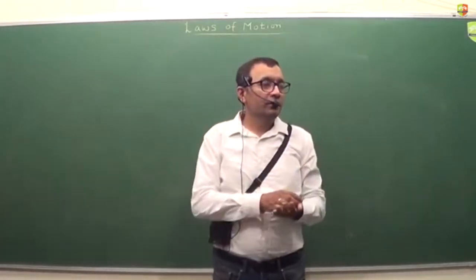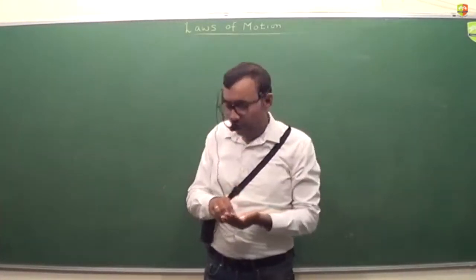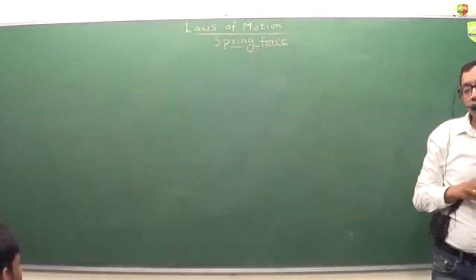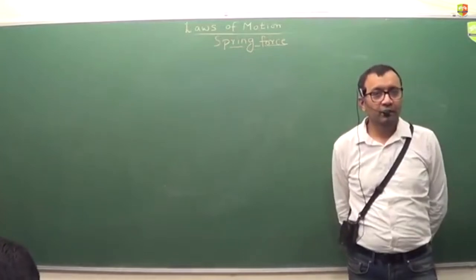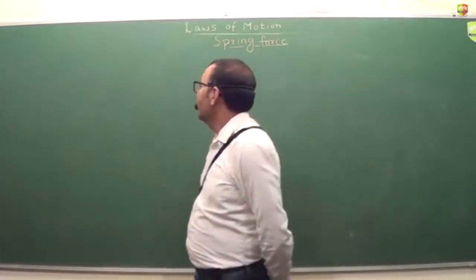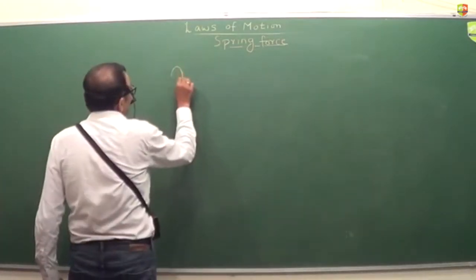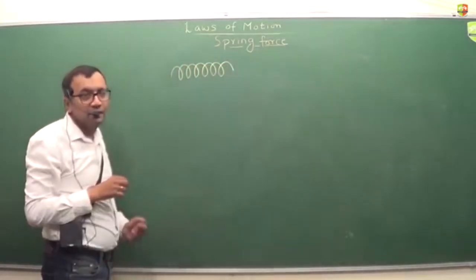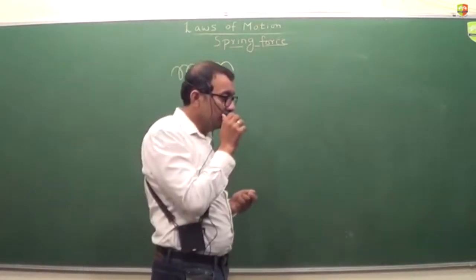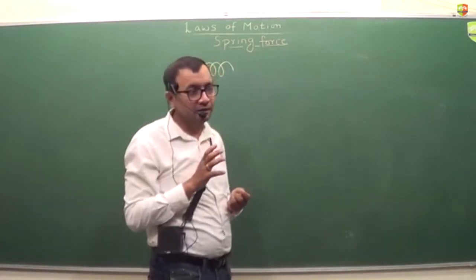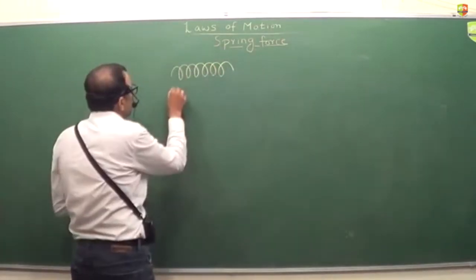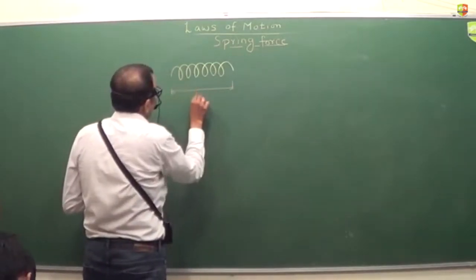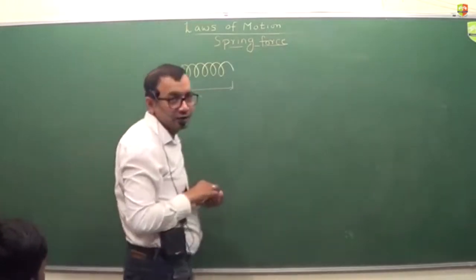The next force is spring force. Now, there can be many kinds of spring. The most common form looks like this — a coiled spring. The spring will have its natural length, let's say L0, which is its natural length.